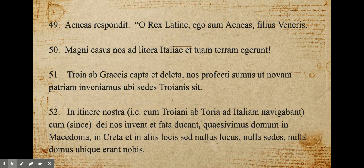In itinere nostra — that is, when the Trojans were sailing from Troy to Italy — since the gods were helping us and the fates were leading, quaesivimus domum in Macedonia, in Creta et in aliis locis sed nullus locus, nulla sedes, nullus domus ubique erant nobis. We sought a home in Macedonia, in Crete, and in other places, but there was no place, no home, no place of residence anywhere for us.